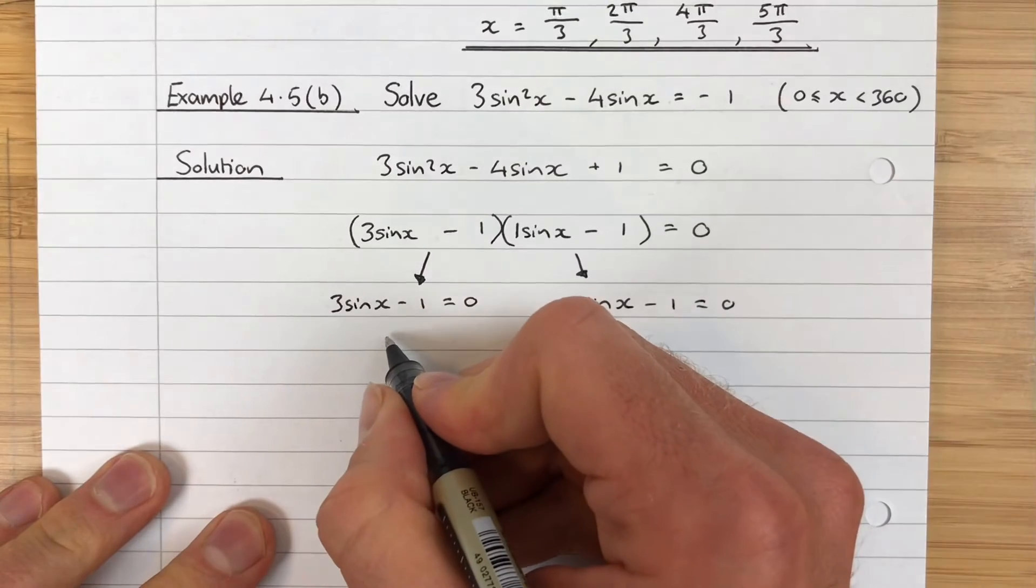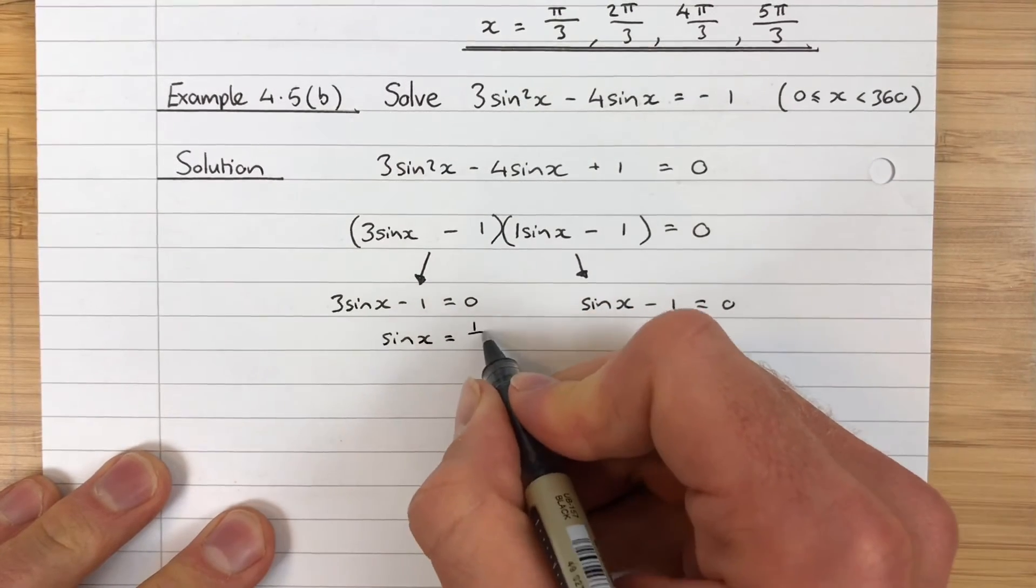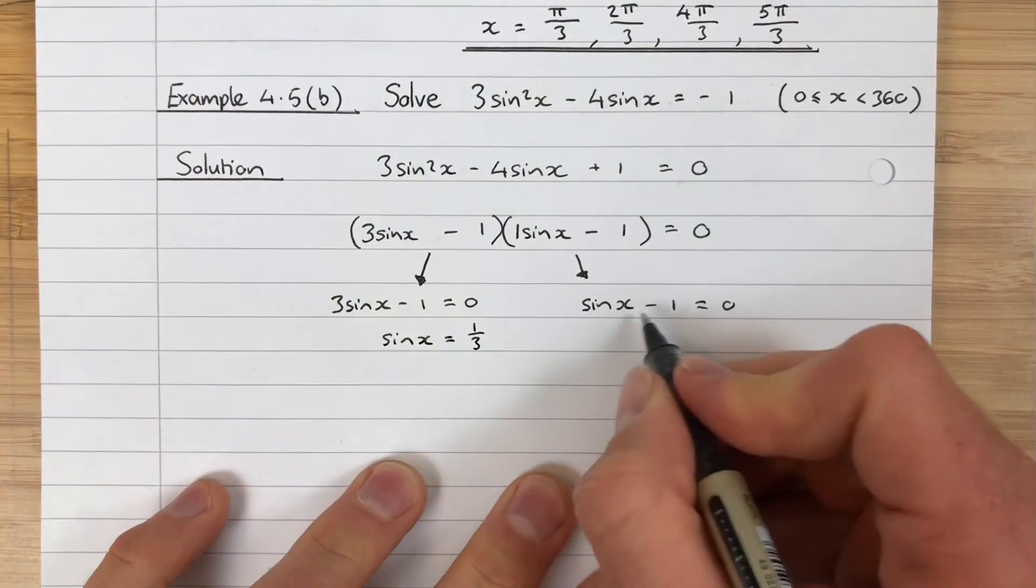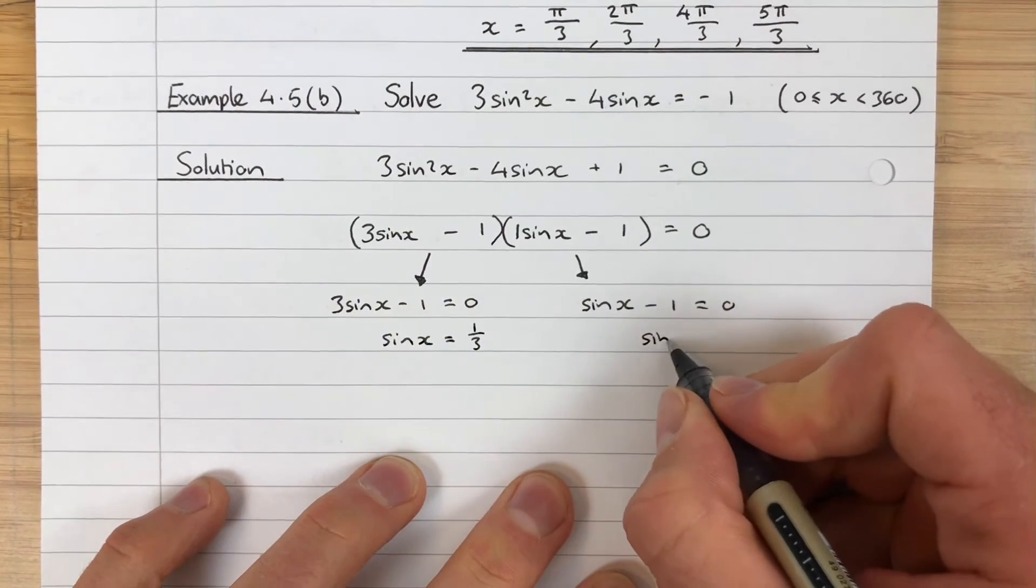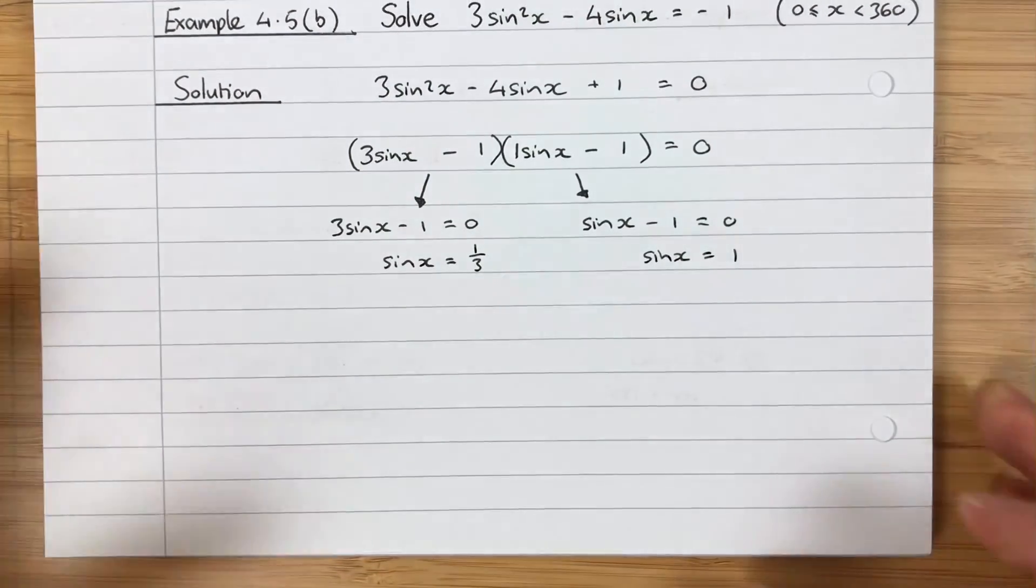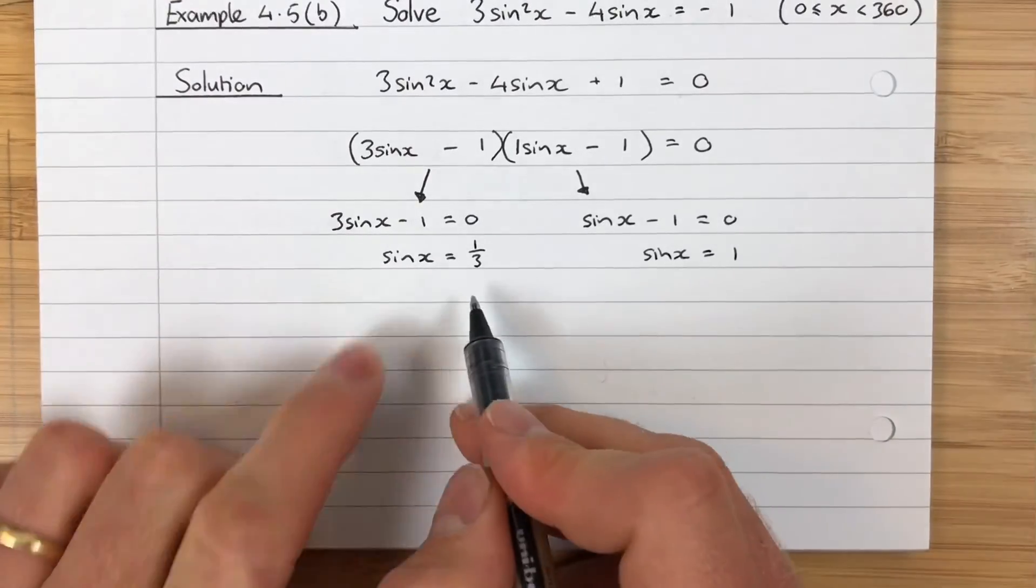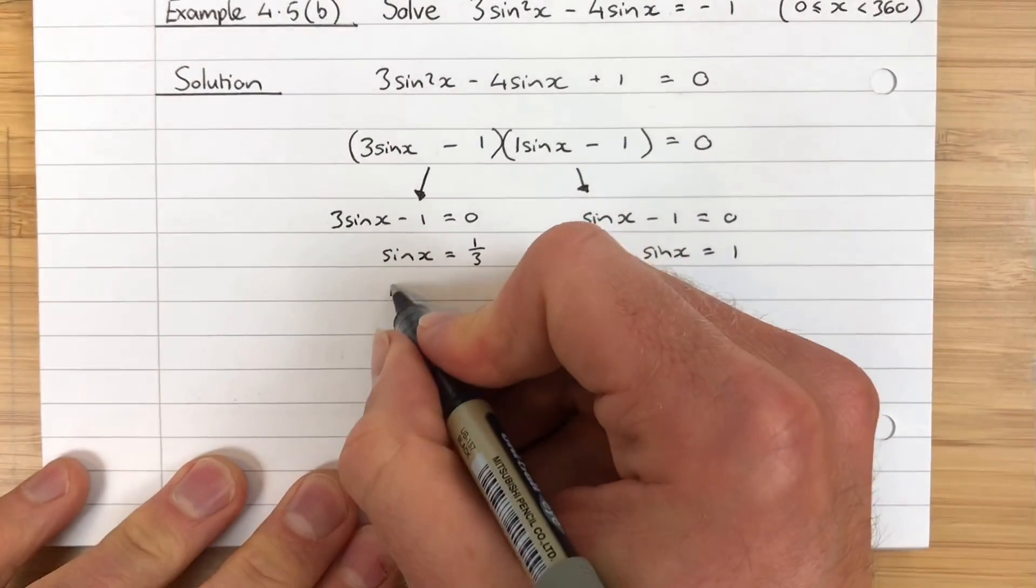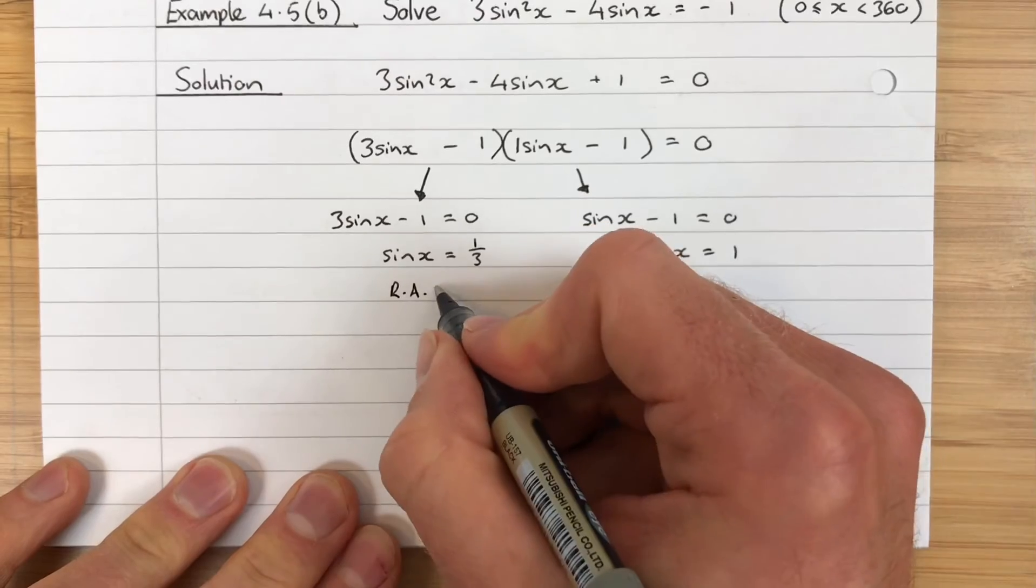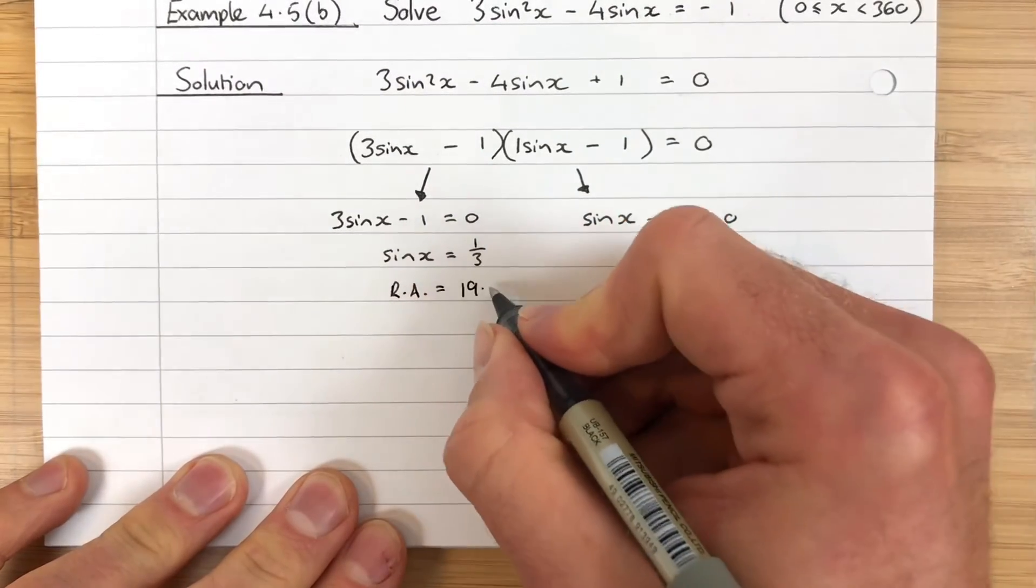This side, isolate the trig term: sin x = 1/3. This side, isolate the trig term: sin x = 1. This one's more standard, this is the thing we're used to seeing. So we will first of all find the related angle, and the related angle for sin x = 1/3 is 19.47. That's the one I was saying you'll get used to seeing a lot.